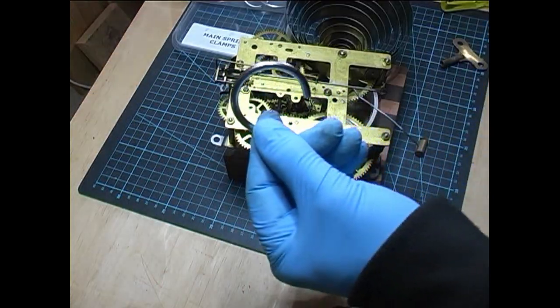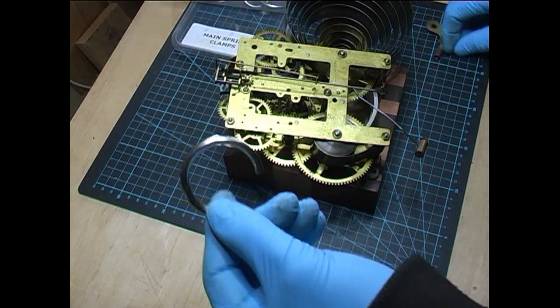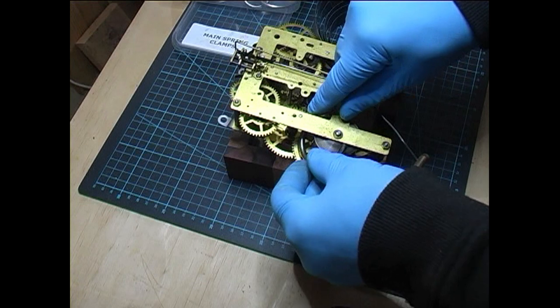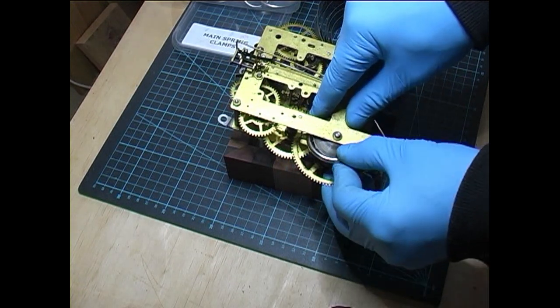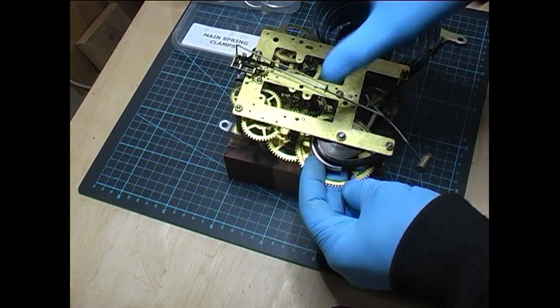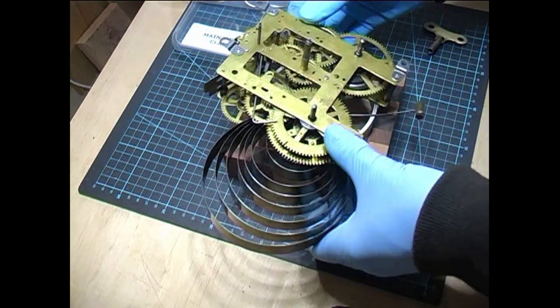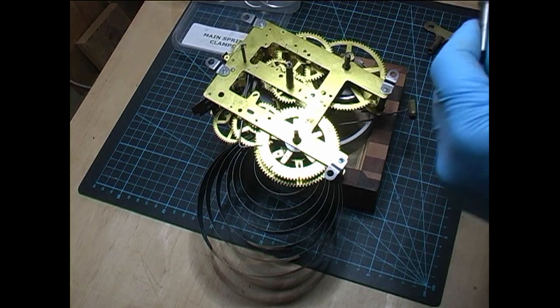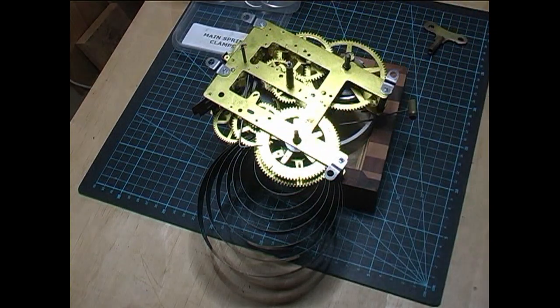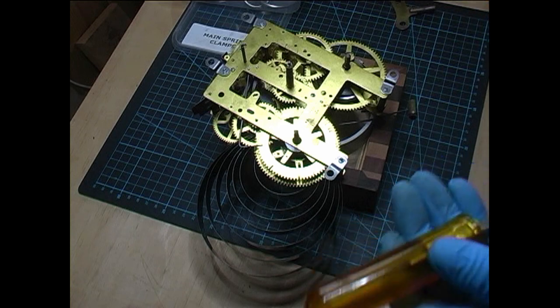I've selected the right size mainspring clamp. That one there. We're going to put it around the going side spring. So we'll pop that in there. Push it on. That's pretty tight. So we won't have to let it down very much. Now, using a let down tool. You don't use a key for doing this. Because if it slips, it'll make a real mess of your thumb.